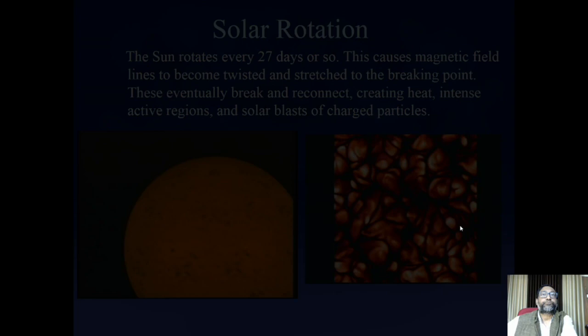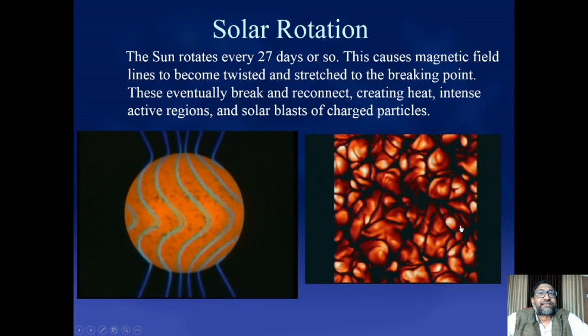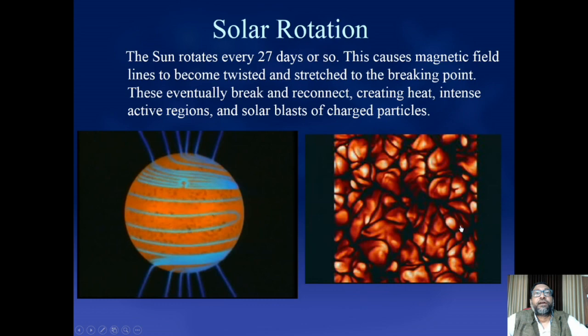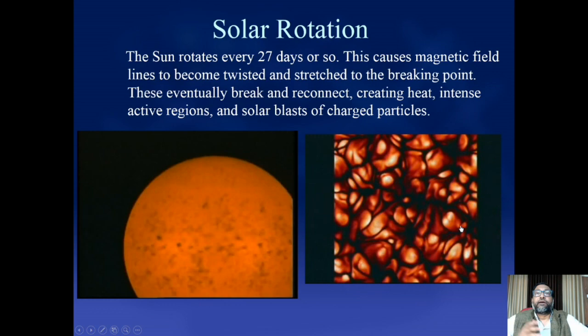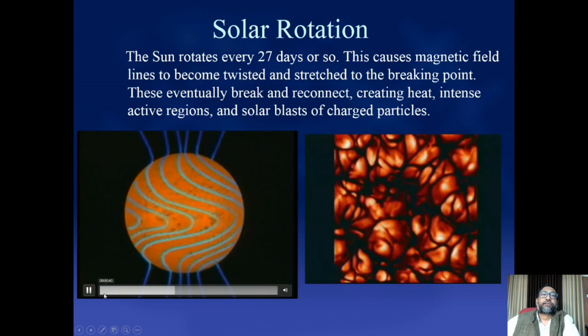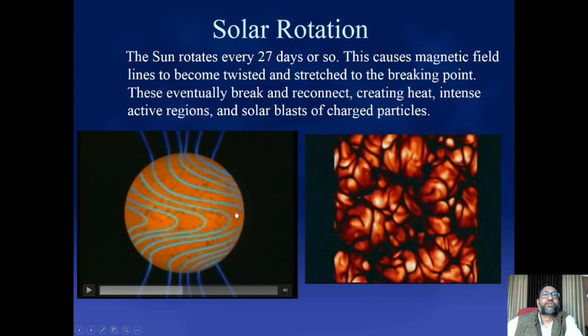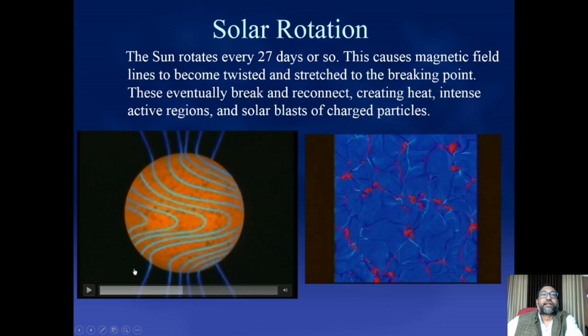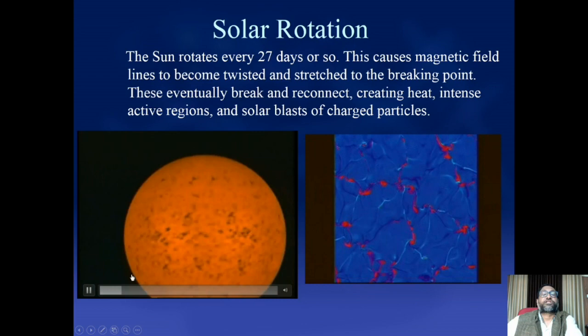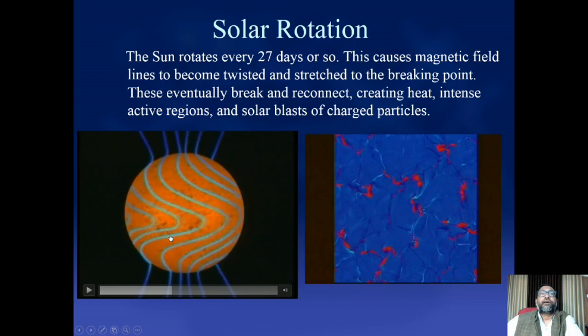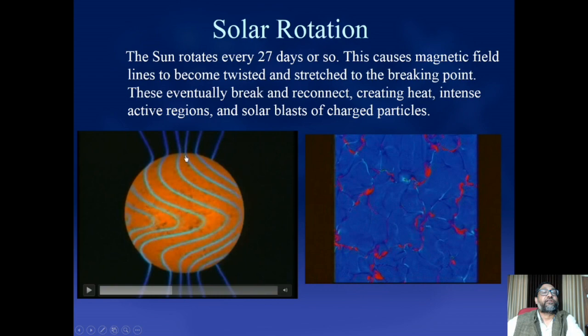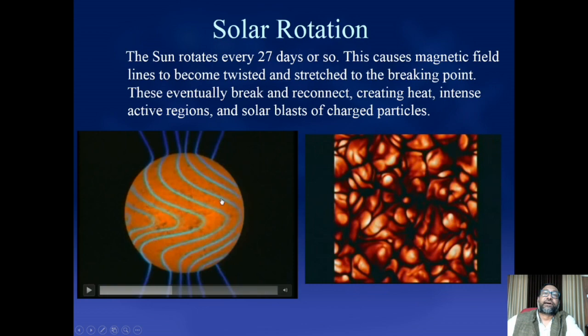Returning to solar rotation — as Galileo observed, the sun rotates every 27 days or so. But what you see in this movie is that the sun doesn't rotate uniformly. The sun rotates differentially — different parts rotate at different speeds. The equator rotates faster than the poles. If you consider a north-south field alignment, differential rotation causes the field lines to get twisted and sheared, creating a lot of complexity inside.